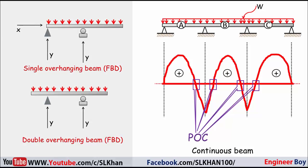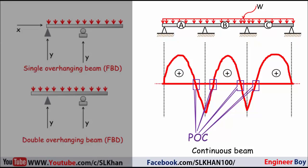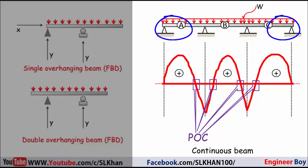A continuous beam has more than two points of support along its length, which means it has more than one span. The end span of a continuous beam can be a cantilever. They can be back supported or may also be freely supported. These are indeterminate beams which cannot be fully analyzed using only equilibrium equations.